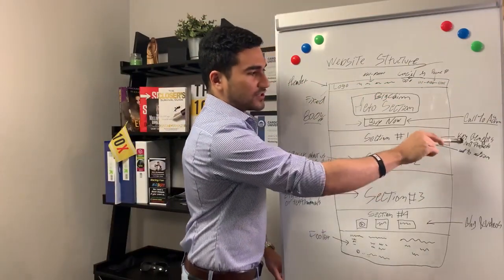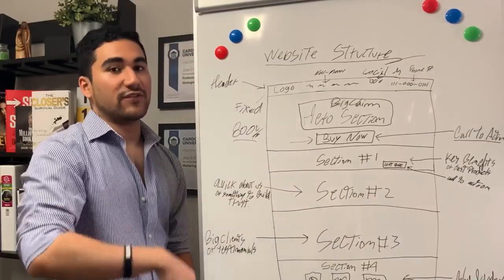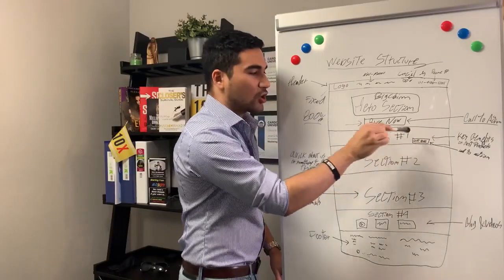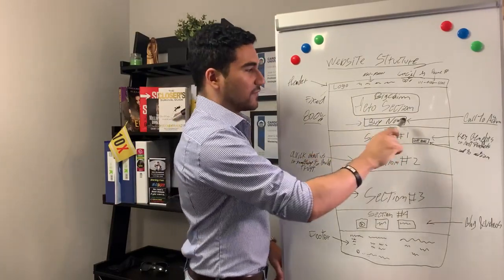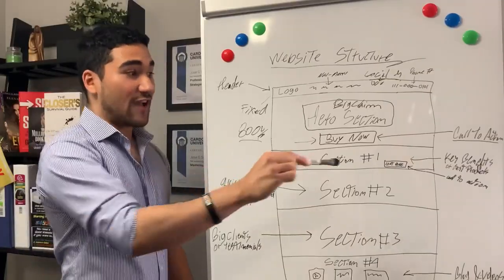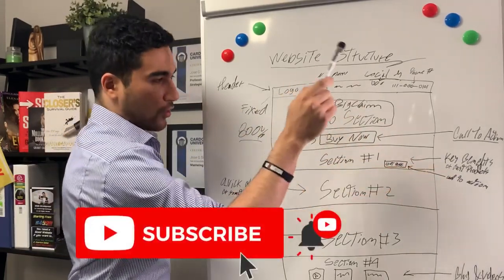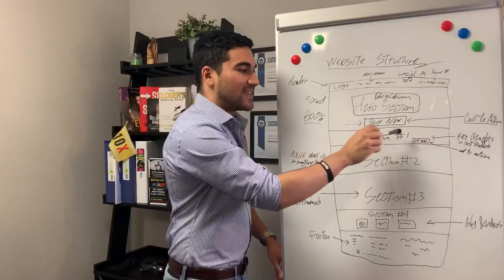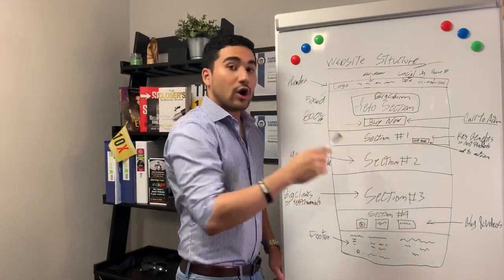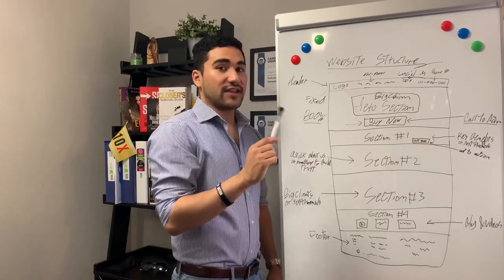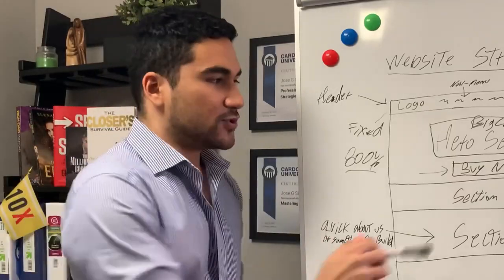The next section I always use for the key benefits of your business — the best products, why they should choose you instead of the competition. Right after that, I put another call to action button. After you show them what you can do, or why you're the best in the industry, you want to tell them they can buy now again, creating trust and value so the client is ready to pull the trigger.